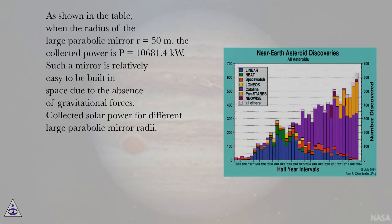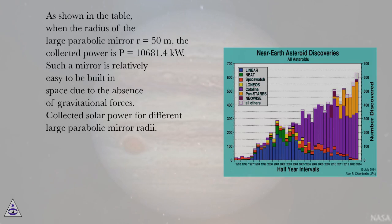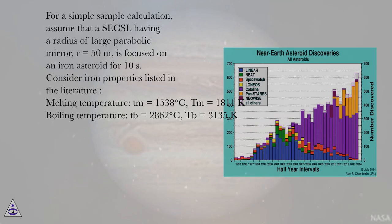Table 1 shows the correlation between the mirror diameter and the amount of collected power. For a sample calculation, assume a system having a large parabolic mirror radius of R = 50 meters, focused on an iron asteroid for 10 seconds.